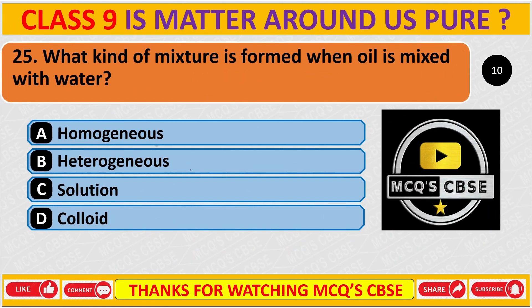What kind of mixture is formed when oil is mixed with water? The correct answer is B: a heterogeneous mixture.